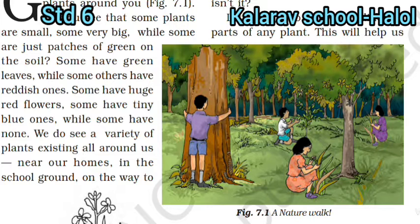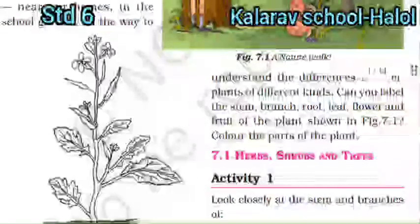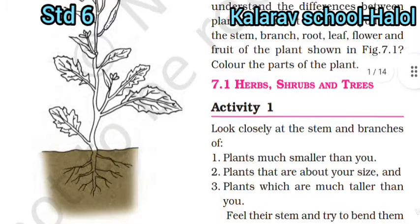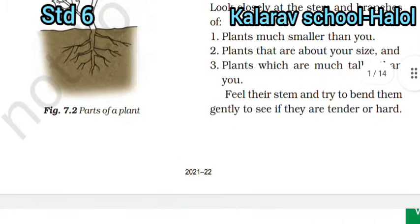So if we go to a garden or anywhere, we will see different kinds of plants around us, and that is what we are going to study now. Activity one: Herbs, Shrubs and Trees. Look closely at the stem and branches of plants — plants much smaller than you, plants that are about your size, and plants which are much taller than you.